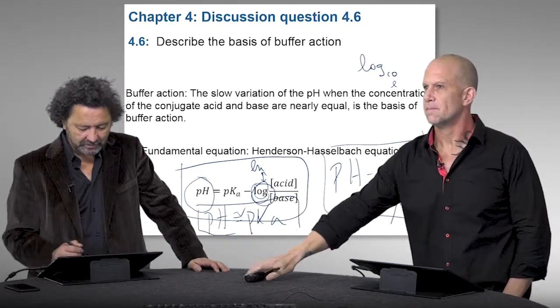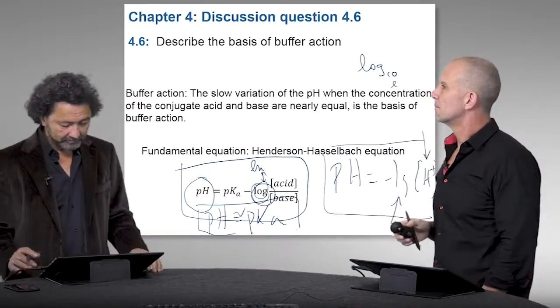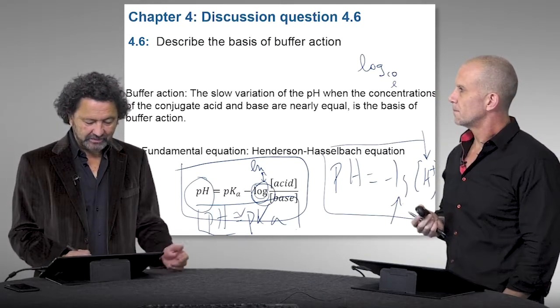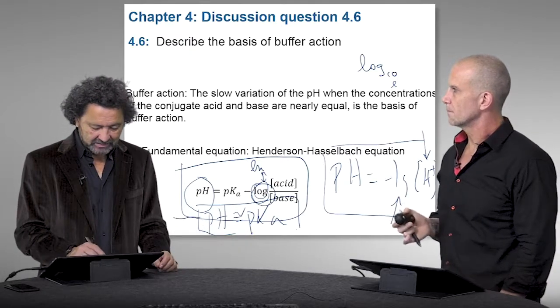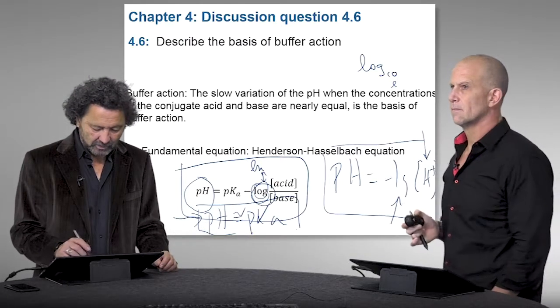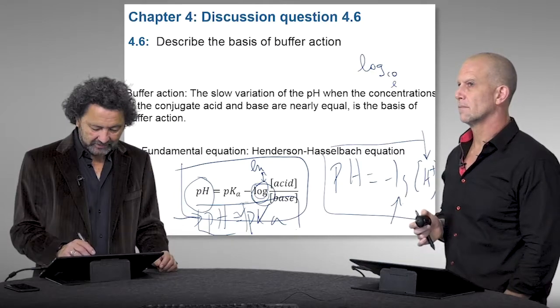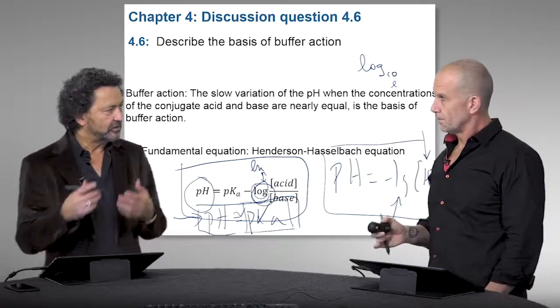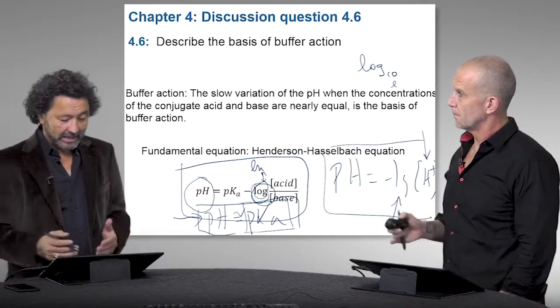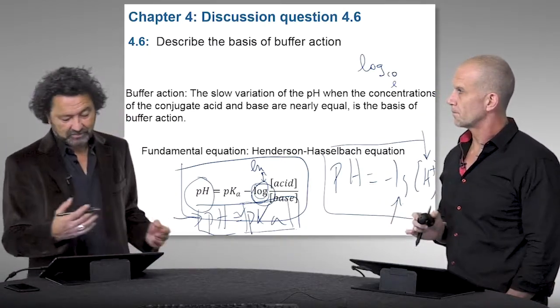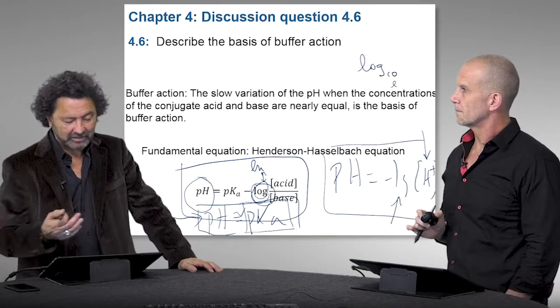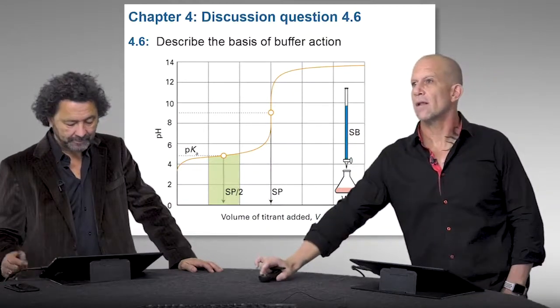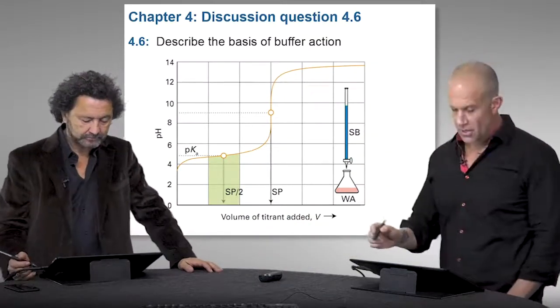So this gives you a rule of thumb as to how to select a particular buffer, because it tells you that if you want to keep your pH at a certain value, you have to look for a pair of acid-base that has a pKa in that range. So this gives you an idea. It's mathematically based, and you should never forget that. It's not a question of remembering by heart an equation.